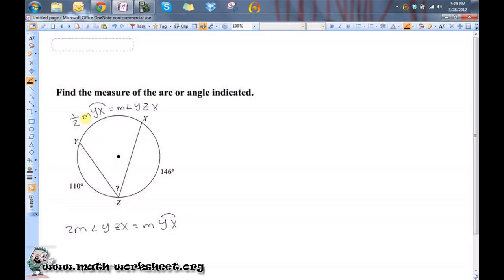Now, I know if I take the measure of this arc here, plus the measure of this arc here, plus the measure of this arc here, they all add up to 360 degrees. So, let me write that. The measure of arc YZ, plus the measure of arc YX, plus the measure of arc XZ, equal 360 degrees.